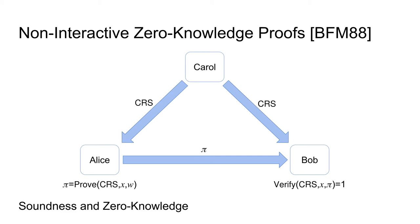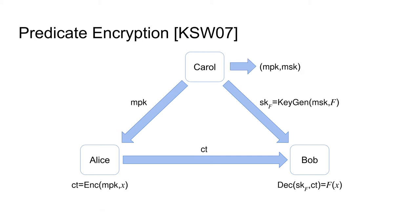In a predicate encryption scheme, Carol's setup procedure outputs a master public key and a master secret key. The master public key can be used by Alice to generate a ciphertext ct encrypting an attribute set x. The master secret key is used by Carol to generate a functional key skf associated with a policy f. When Bob uses this functional key to decrypt the ciphertext ct, he obtains f applied on the attribute set — yielding f(x). We require the predicate encryption scheme to be attribute-hiding, meaning Bob learns nothing more about the encrypted attribute set than what is leaked by the evaluation of policy f. In our construction, we only require a secret-key predicate encryption scheme.